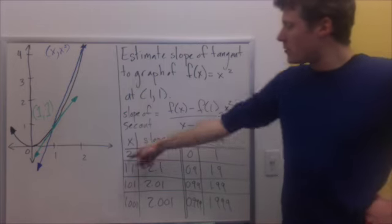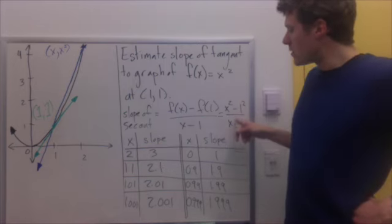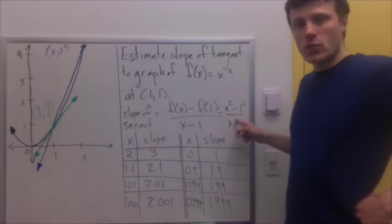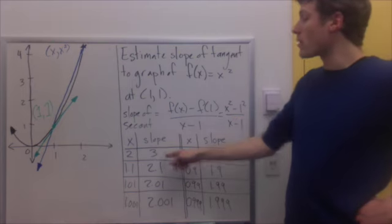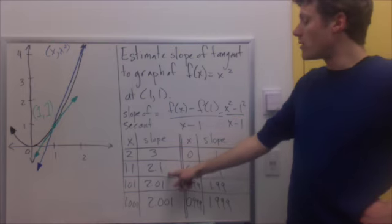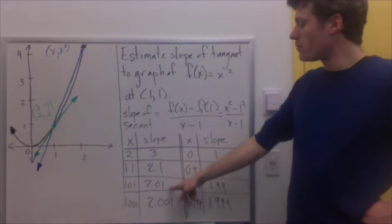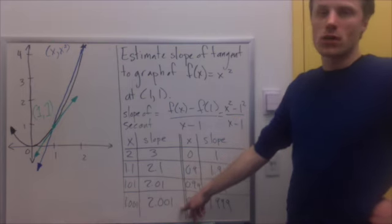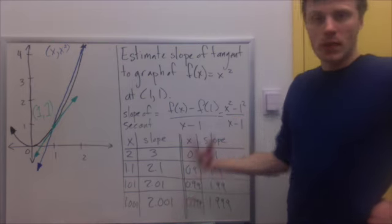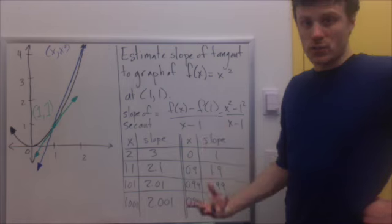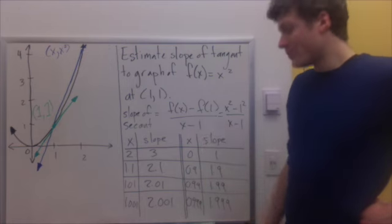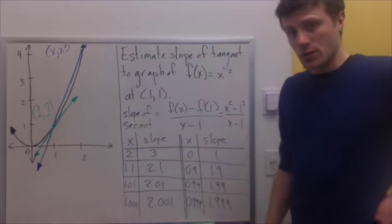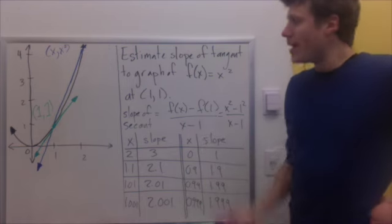When I put these values into the equation for the slope of the secant line, I get 3, then 2.1, then 2.01, then 2.001. It looks like it's approaching a value — it looks like it's getting closer to 2.